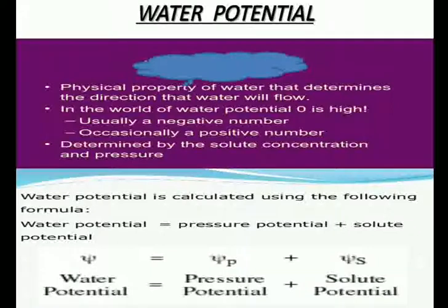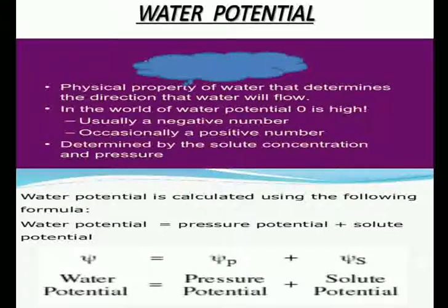For a solution at atmospheric pressure, water potential equals solute potential — meaning under ideal conditions with no pressure, solute potential equals water potential. If a pressure greater than atmospheric pressure is applied to pure water or a solution, its water potential increases — equivalent to pumping water from one place to another. Pressure can build up in the plant system when water enters a plant cell due to diffusion, causing pressure to build up when the cell becomes turgid. This pressure is called pressure potential.